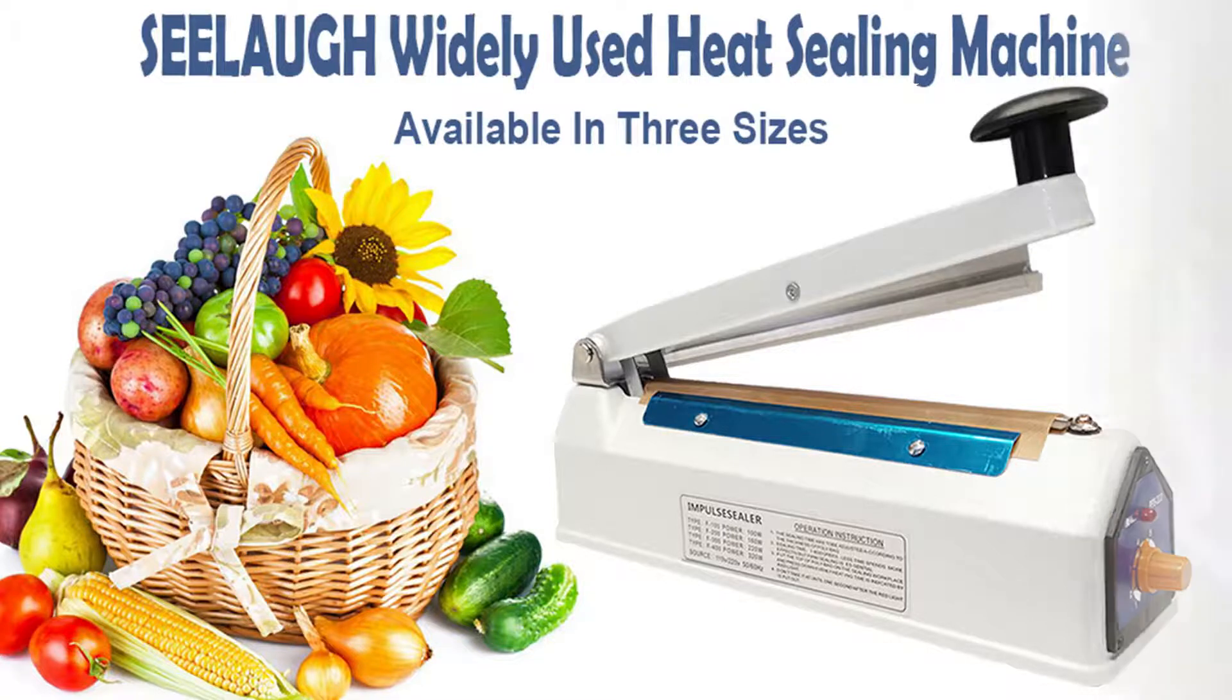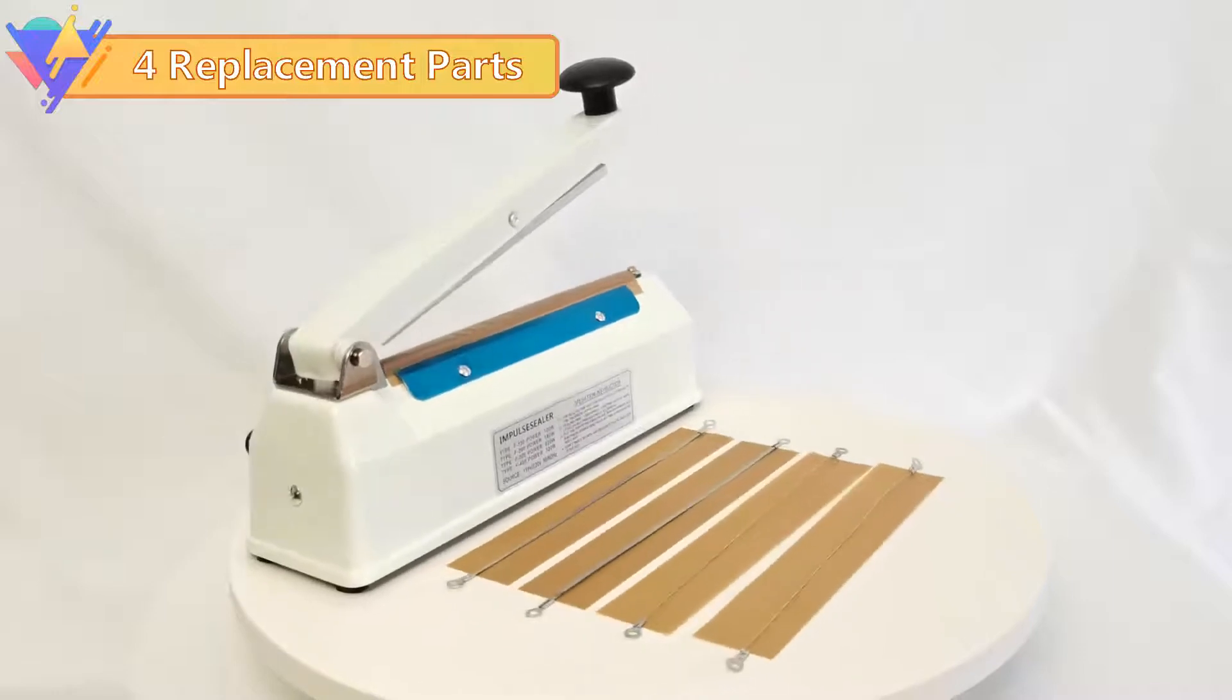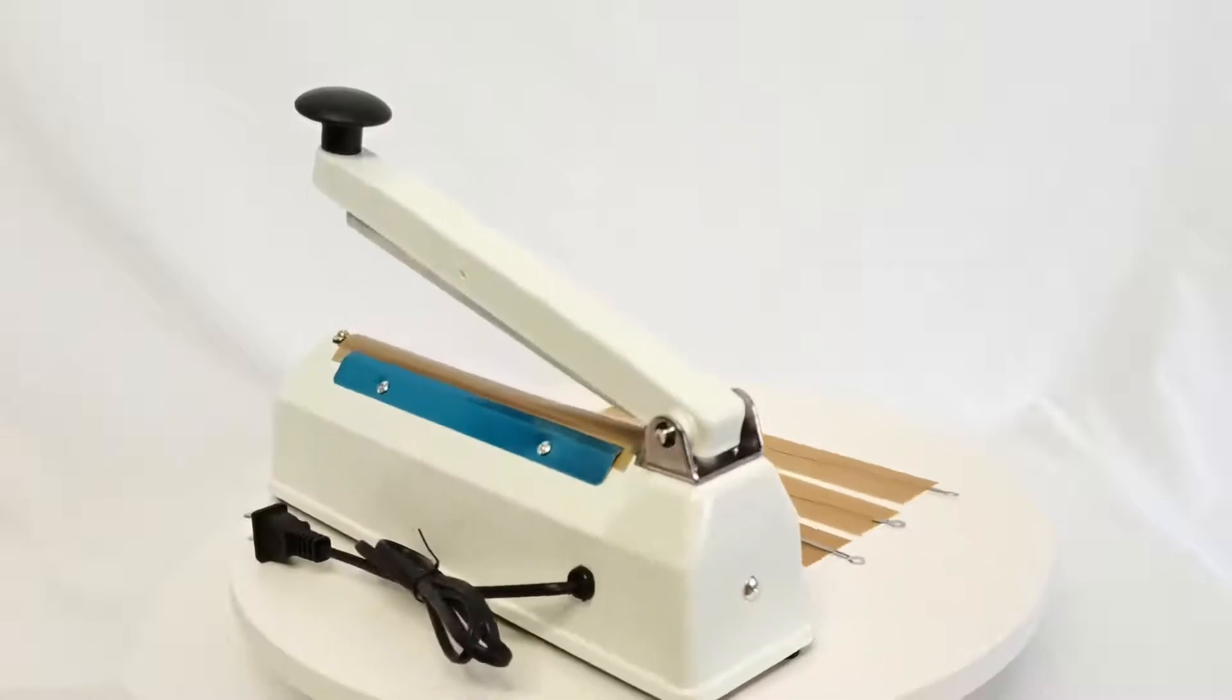Seal on newly upgraded high-quality iron shell impulse bag sealer can well protect the food from going moldy. It is ideal for sealing mylar and cereal bags.